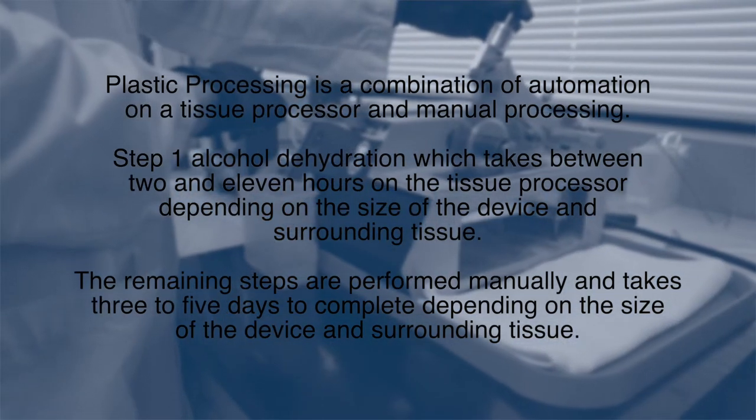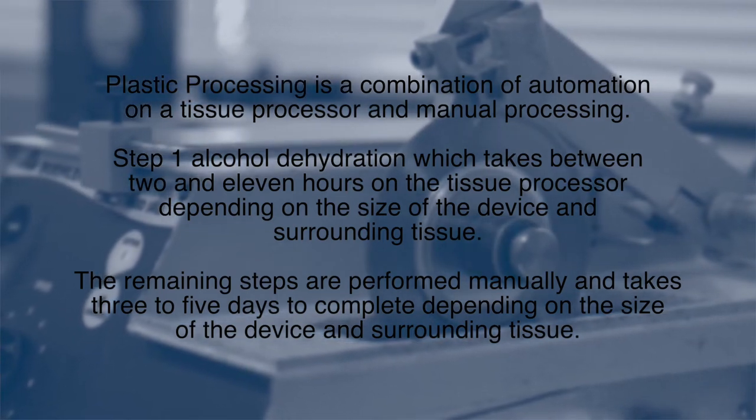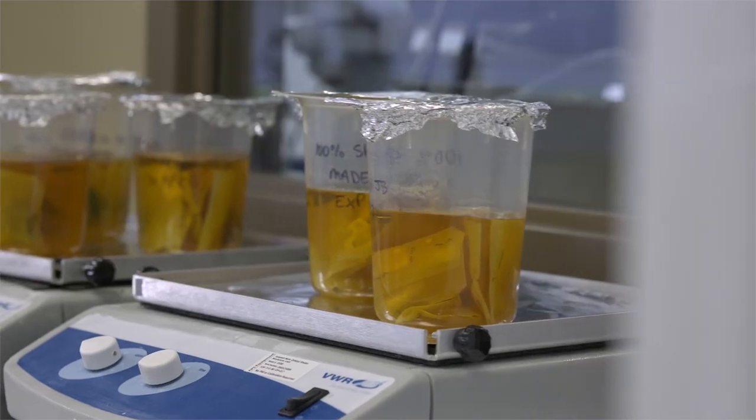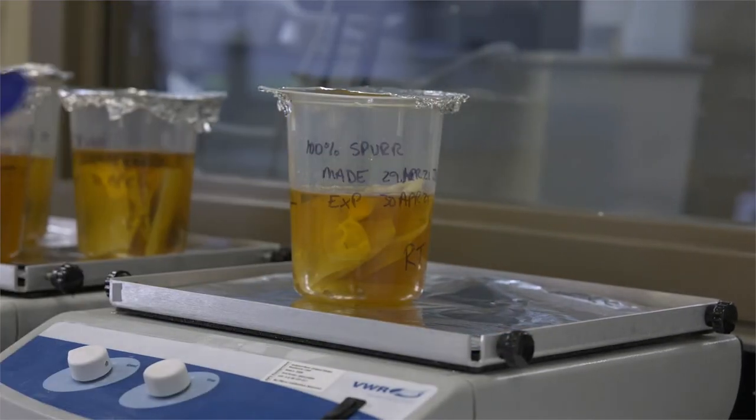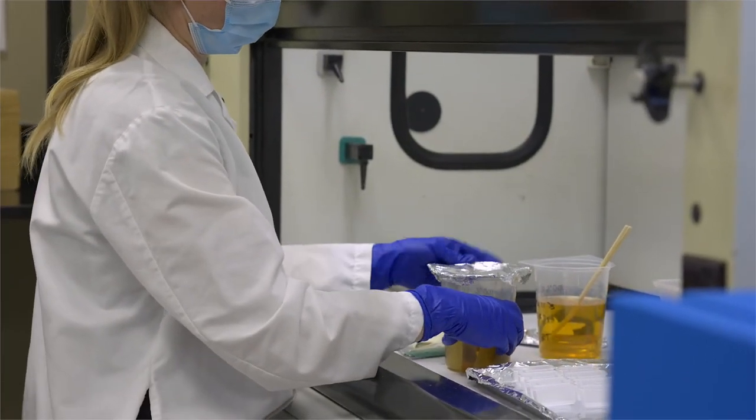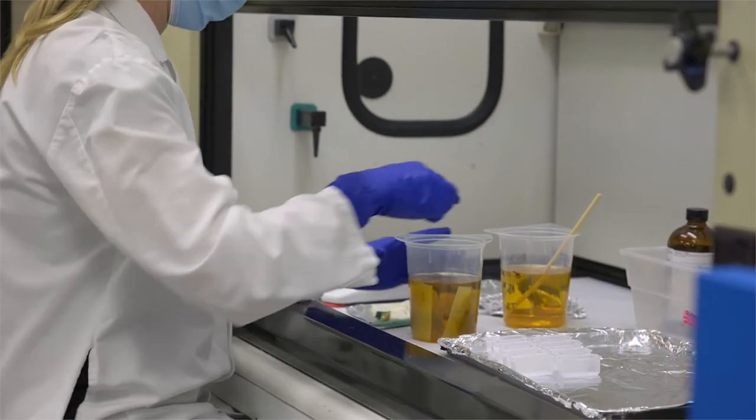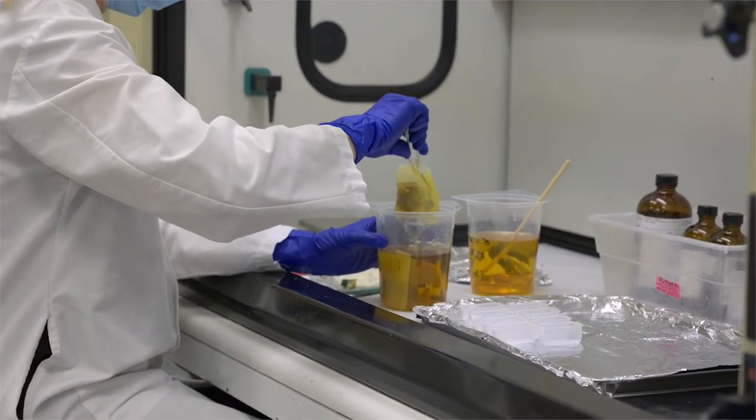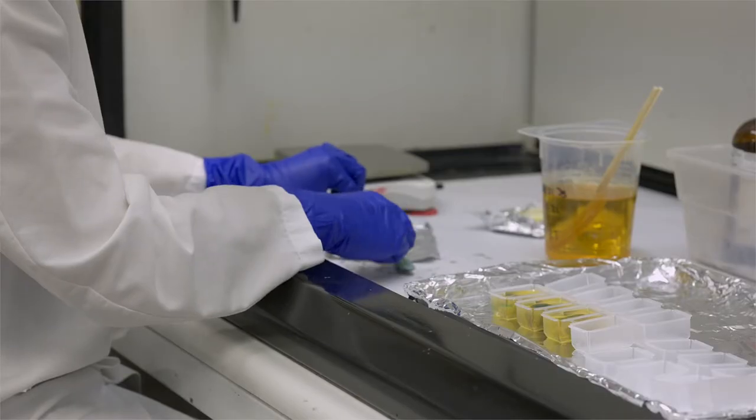The remaining steps are performed manually and take 3 to 5 days to complete depending on the size of the device and surrounding tissue. The samples are further dehydrated with acetone and then infiltrated with increasing percentages of acetone resin solutions beginning with a 50% resin to acetone mixture and ending with 100% resin. The most common resin we use is spur epoxy resin. This process is accelerated with the use of a shaker plate and vacuum oven.